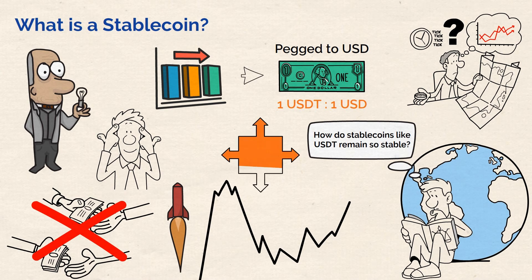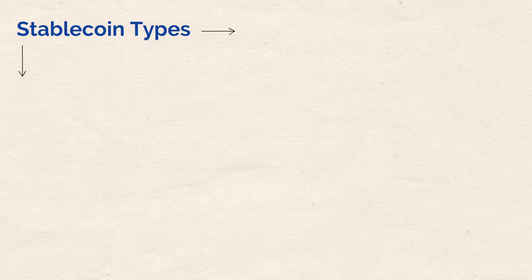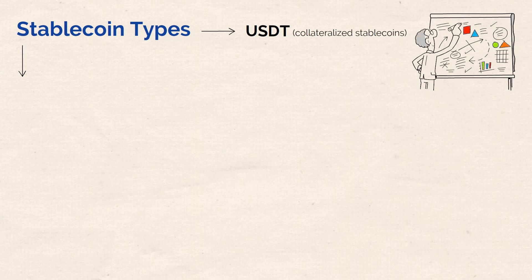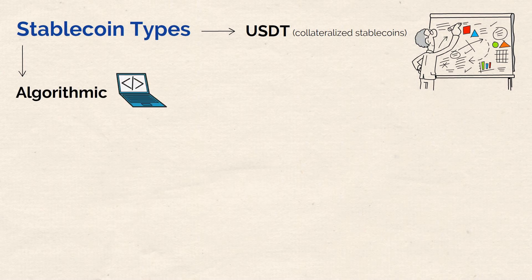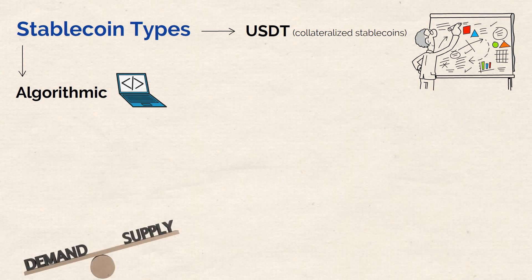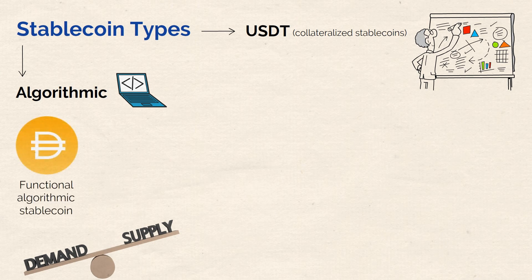But it begs the question: how do stablecoins like USDT remain so stable? It turns out there is more than just one way. There are two main types of stablecoins classified by how they work. The first are coins like USDT, known as collateralized stablecoins. The second type are known as algorithmic stablecoins, which are software-based, using programming to balance supply and demand in order to stabilize their value. DAI is a good example of a functional algorithmic stablecoin.